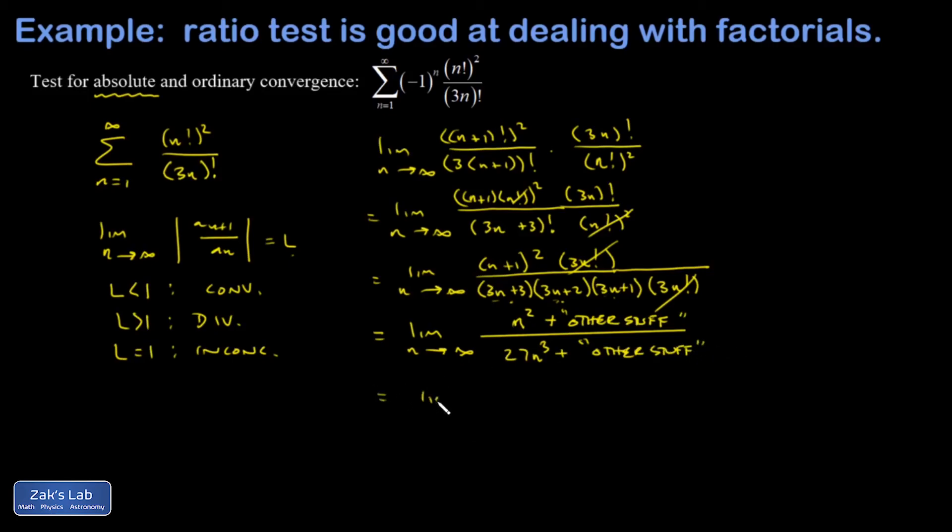And so this limit becomes the limit as n goes to infinity of n squared over 27n cubed, and I cancel two factors of n, and I finally see here that I'm getting zero out of it. So zero is certainly less than one, and that shows that this series converges, and that means this series, the one we started with, we would call it absolutely convergent, which automatically implies that it has ordinary convergence as well.